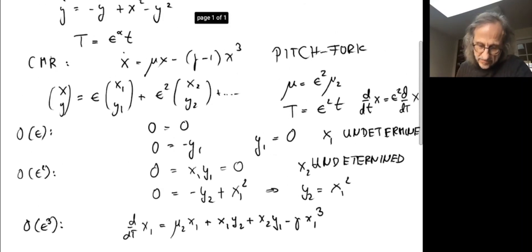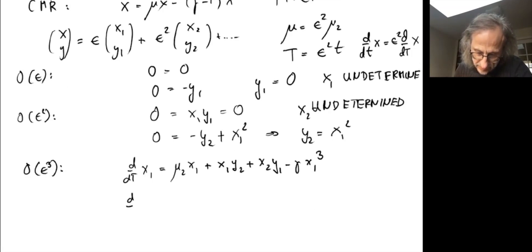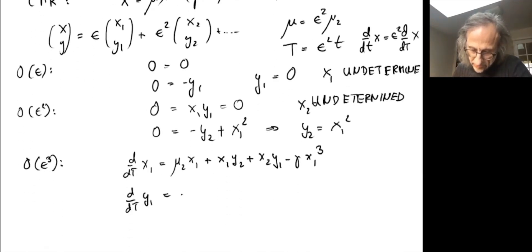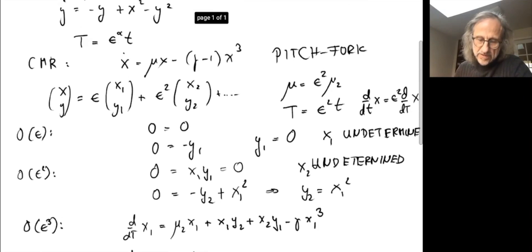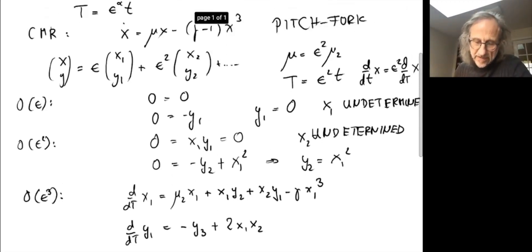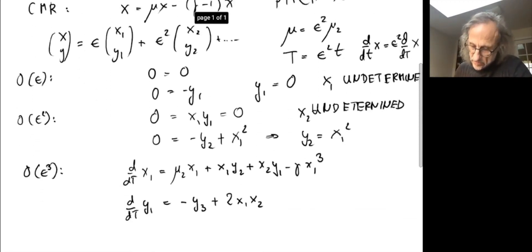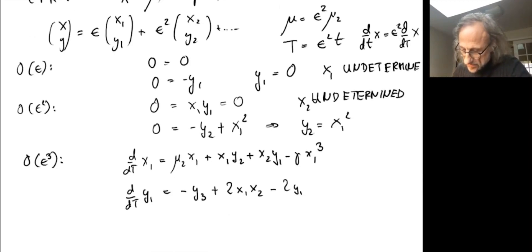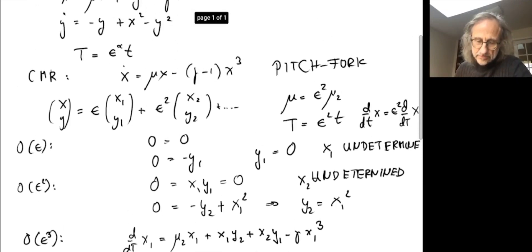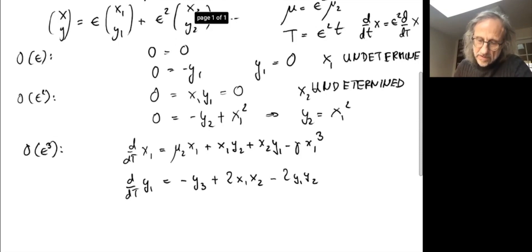While we're at it, let's write down the equation for y. We get a slow derivative of y₁ equals -y₃ + x², which is 2x₁x₂, and then -y², which would be -2y₁y₂.